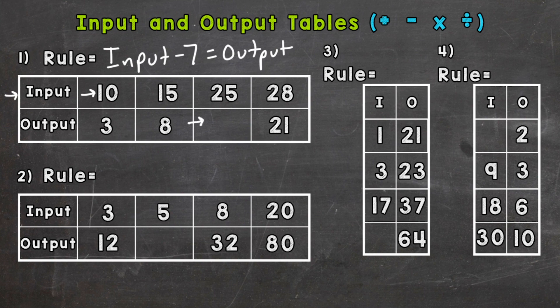Number 2: we start with a 3 that corresponds with 12, we have an 8 and a 32, and then 20 and 80. So our inputs are increasing in value, so it's going to be addition or multiplication.